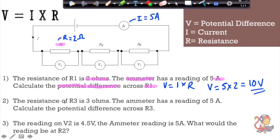So question 2, you've got the resistance of R3 is 3 ohms. So that's R3 over here is 3 ohms. And the ammeter has a reading of 5 amps. So I is 5 amps. Calculate the potential difference across R3.